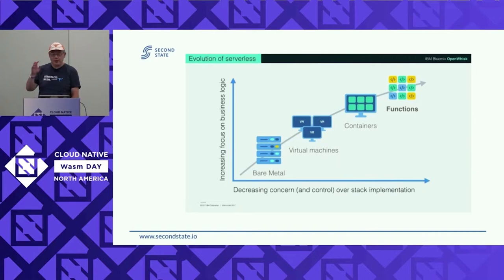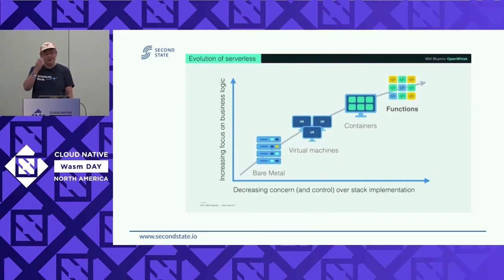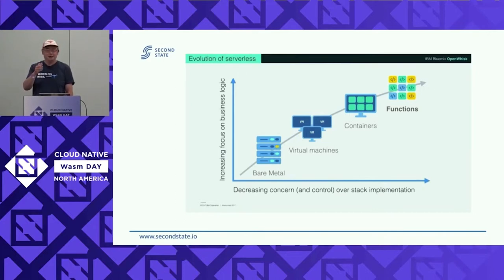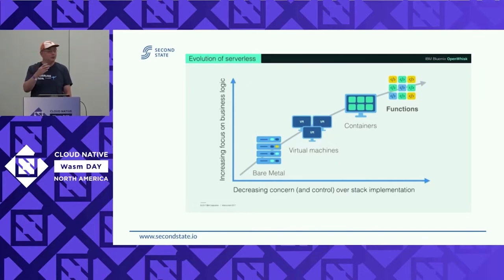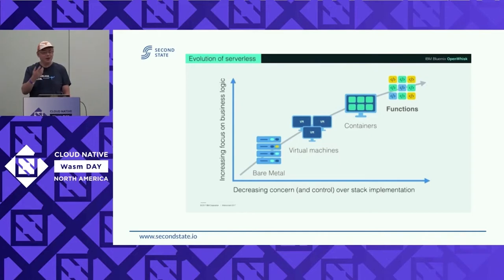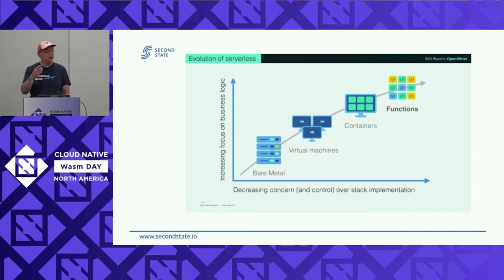So it starts from bare metal. I still remember the days when data centers had your own dedicated servers. You do the iris scan or fingerprint scan, and you can actually find where your software is on those servers. It uses hardware to isolate software — it provides a level of abstraction. And then virtual machines came along, became cloud, became containers.